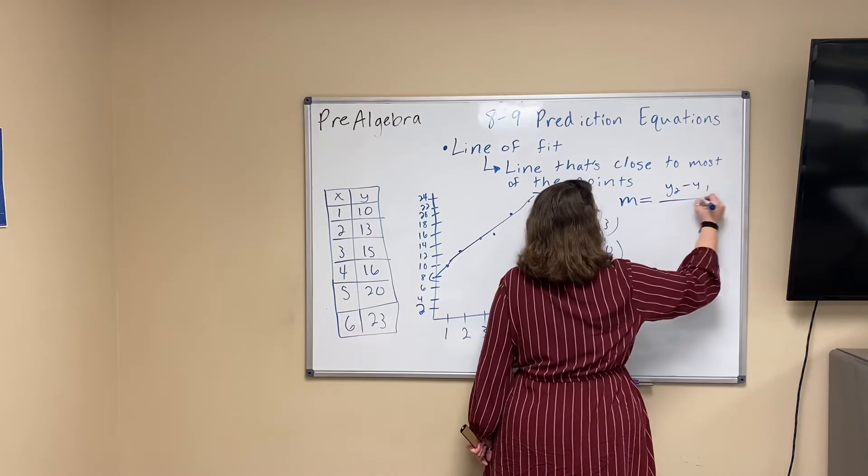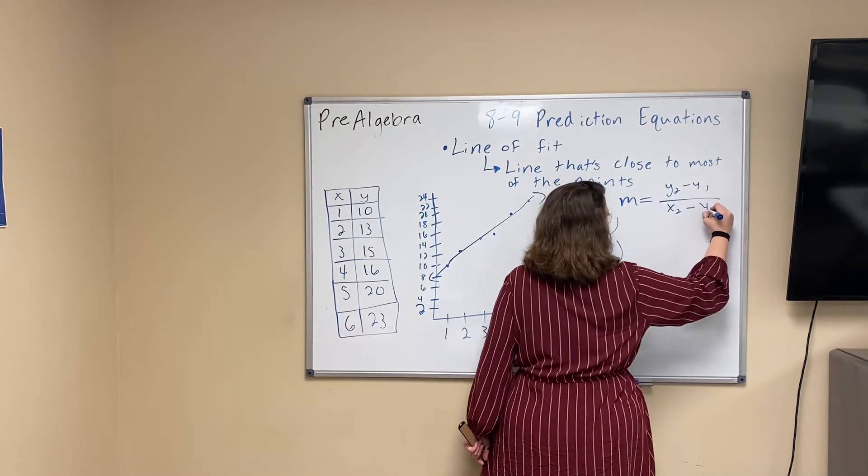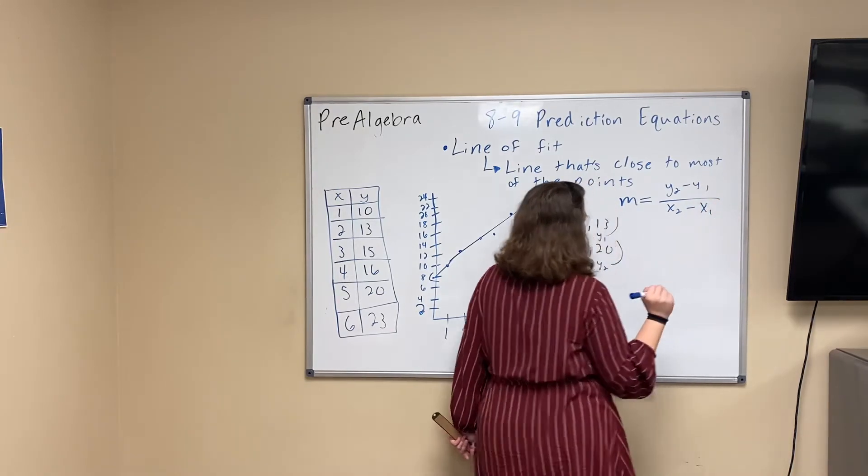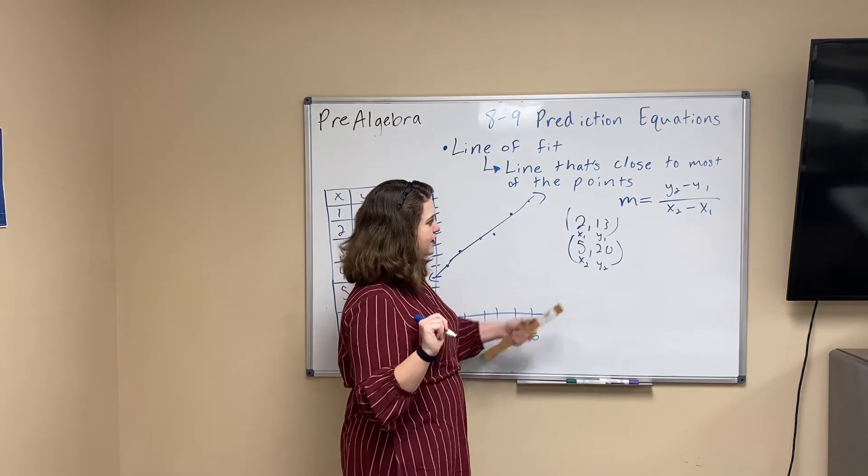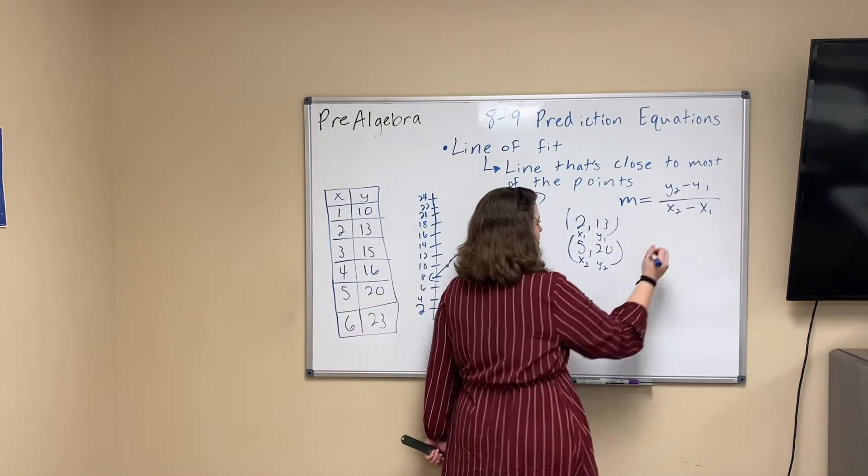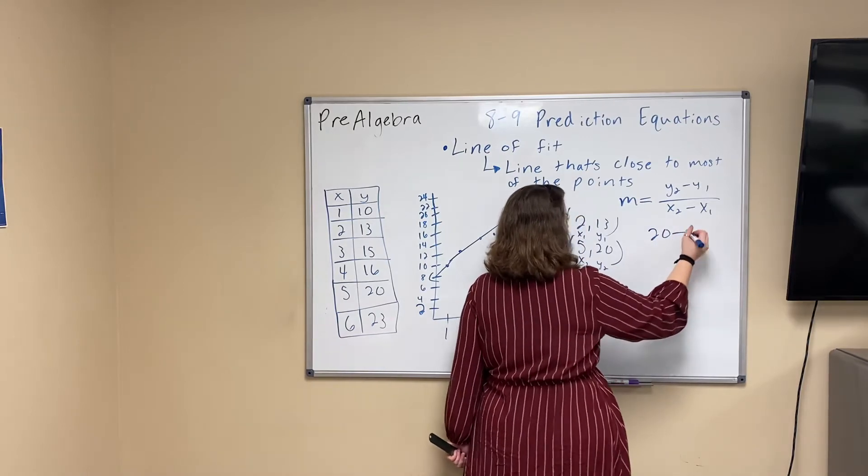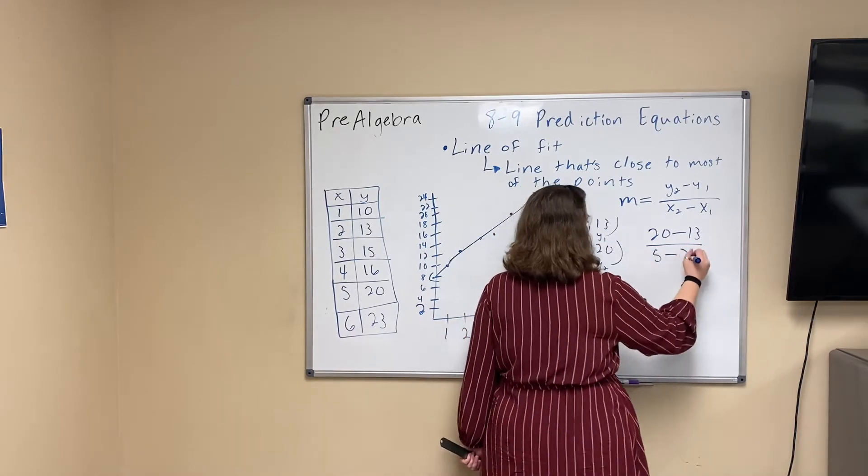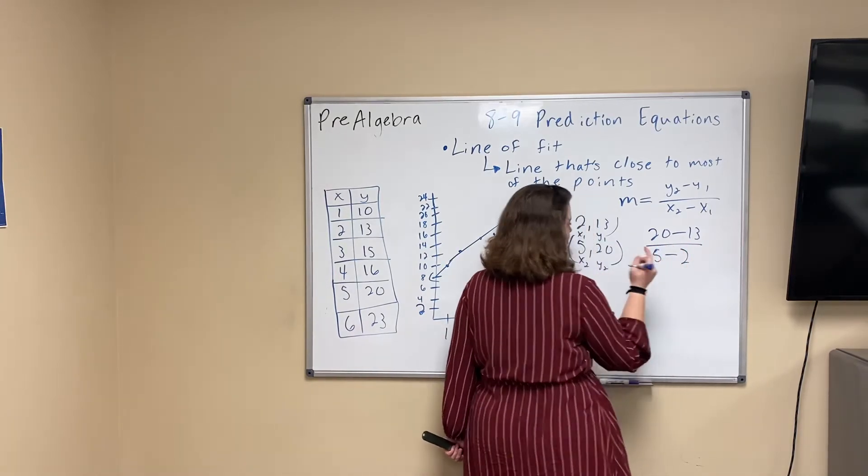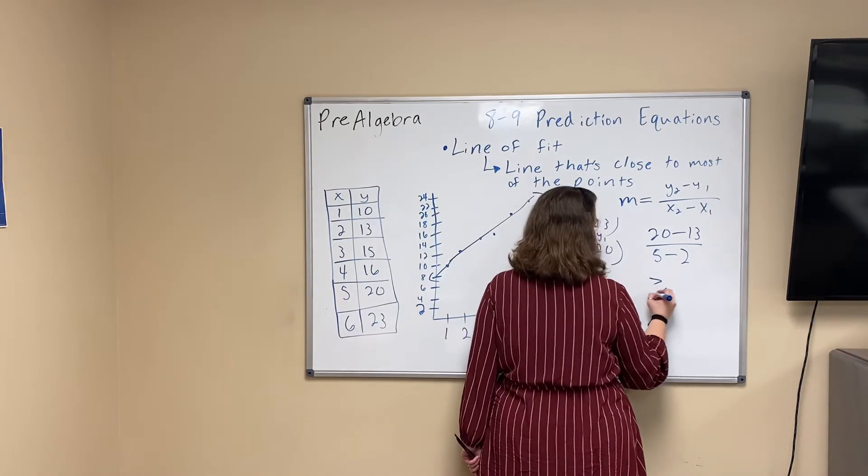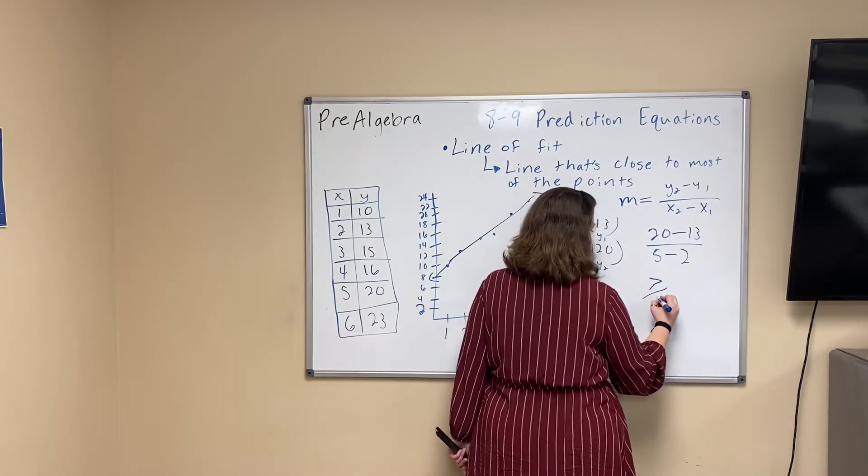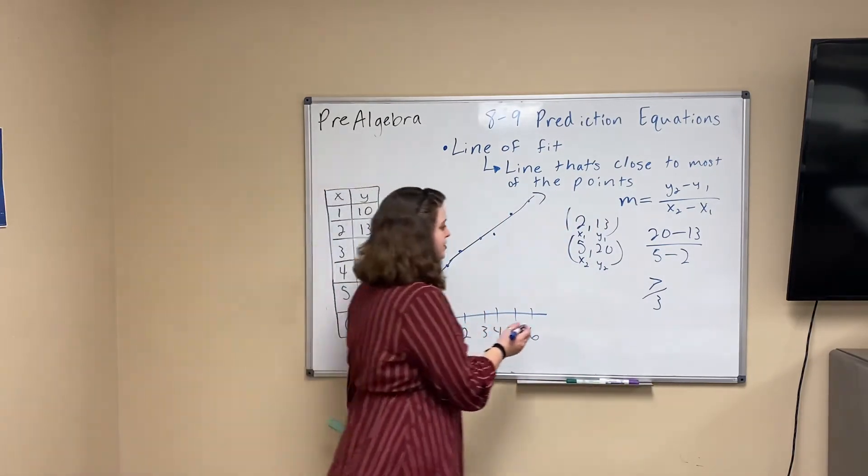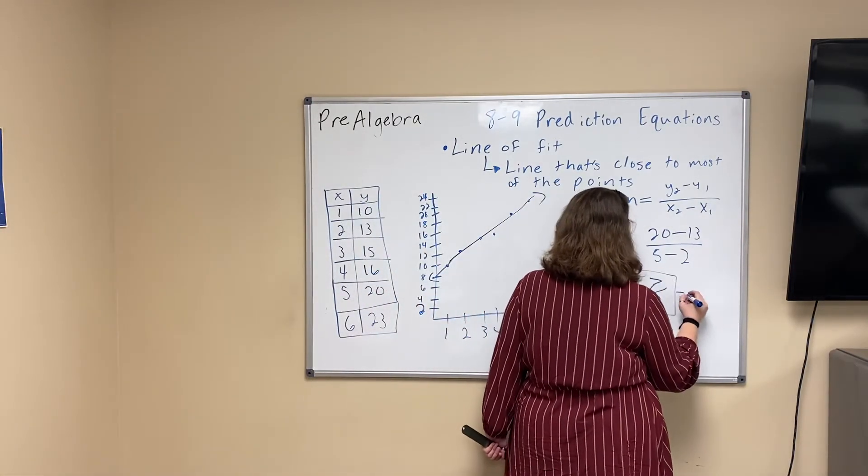We're going to label it x1, y1, x2, y2. We're going to put it into our slope equation. Hopefully you remember our slope formula: y2 minus y1 over x2 minus x1. We're going to put that in to find our slope. So, our y2 is 20, our y1 is 13, over x2 minus x1, 5 minus 2. So we get 20 minus 13, which is 7, over 5 minus 2, which is 3. So we're going to say our slope is about 7/3, because that's already a fraction in its simplest form. So this is our slope.